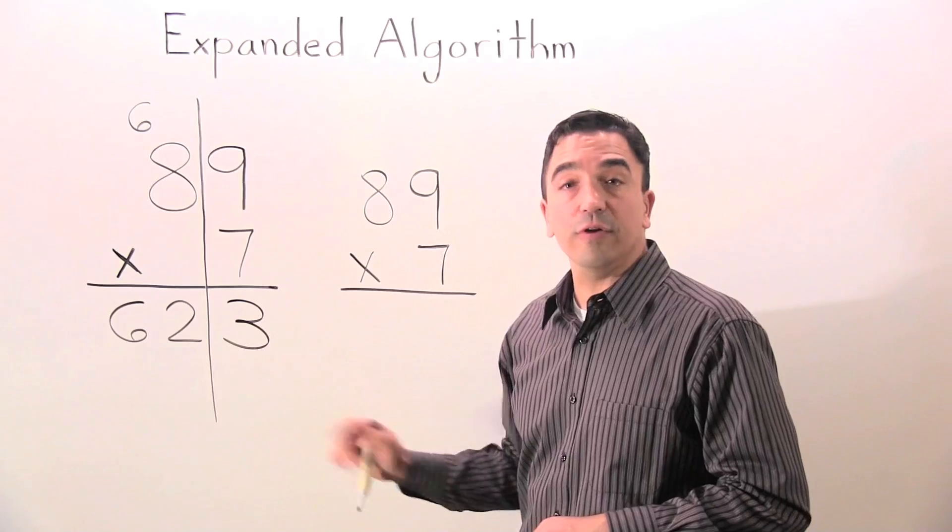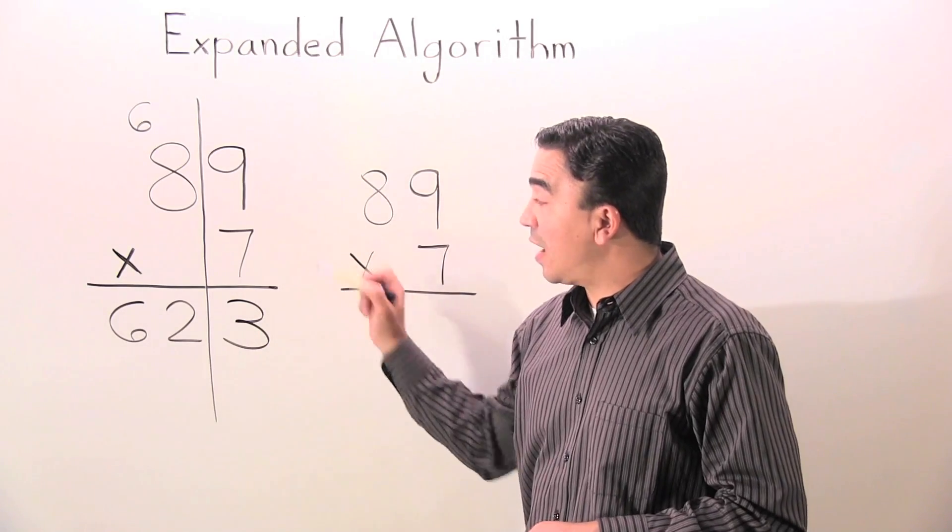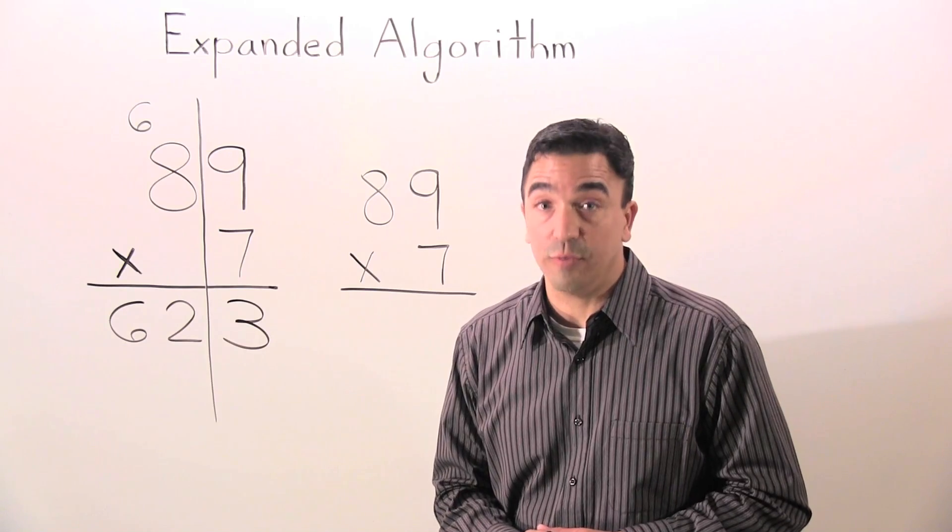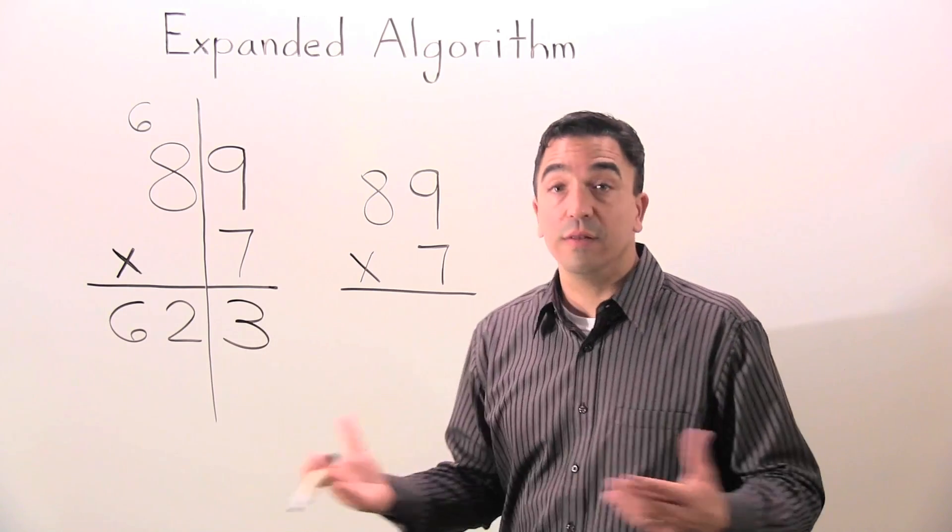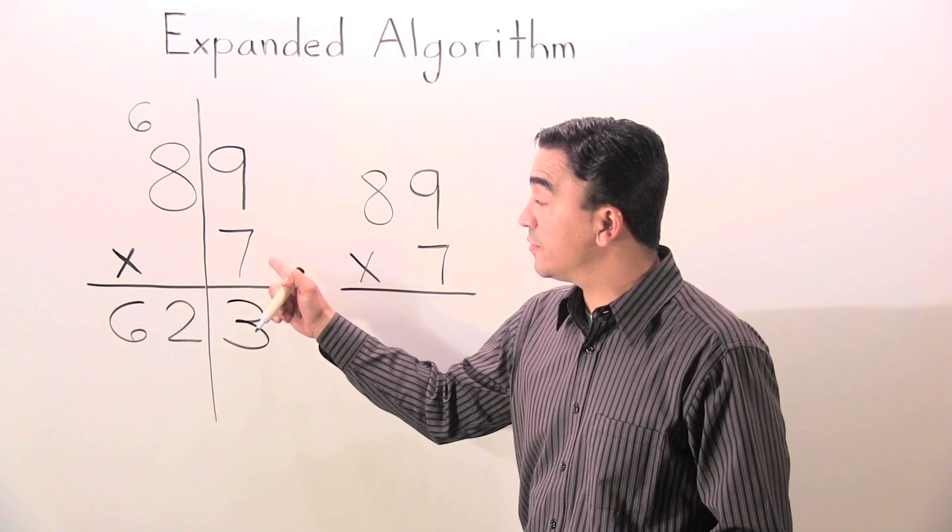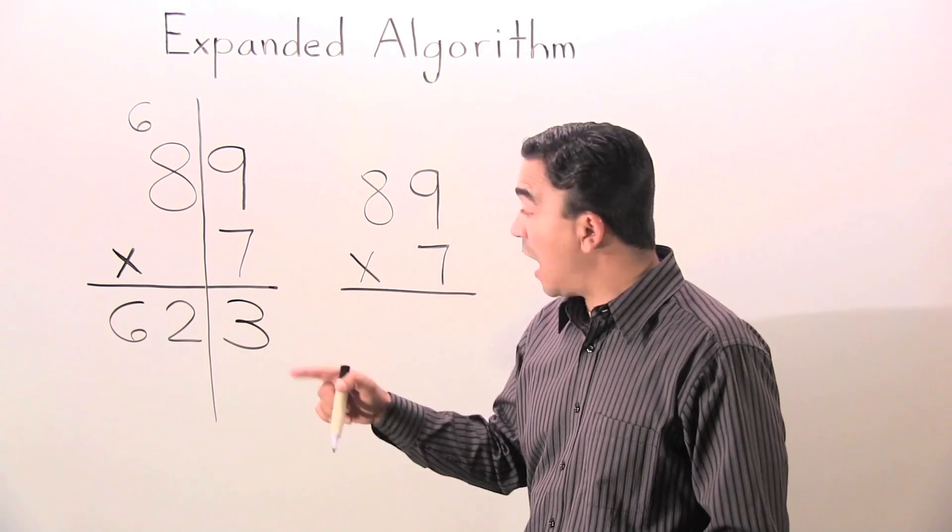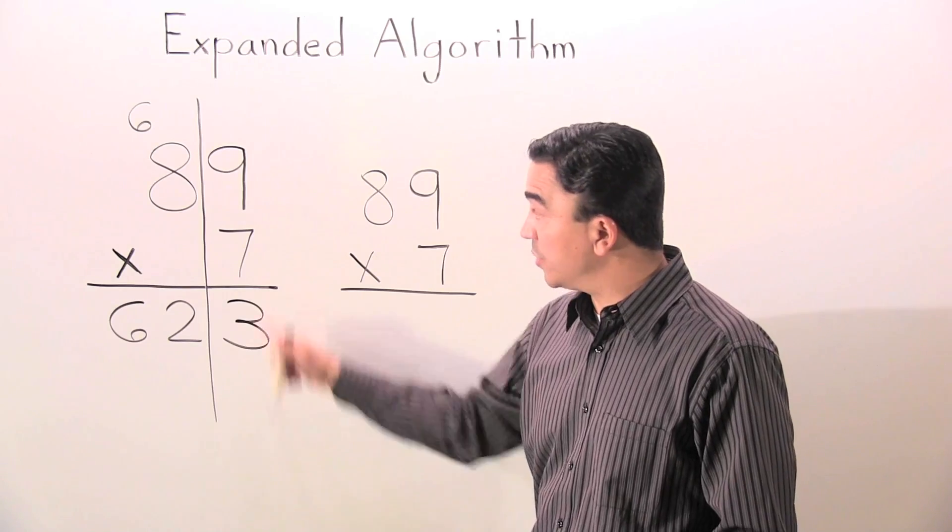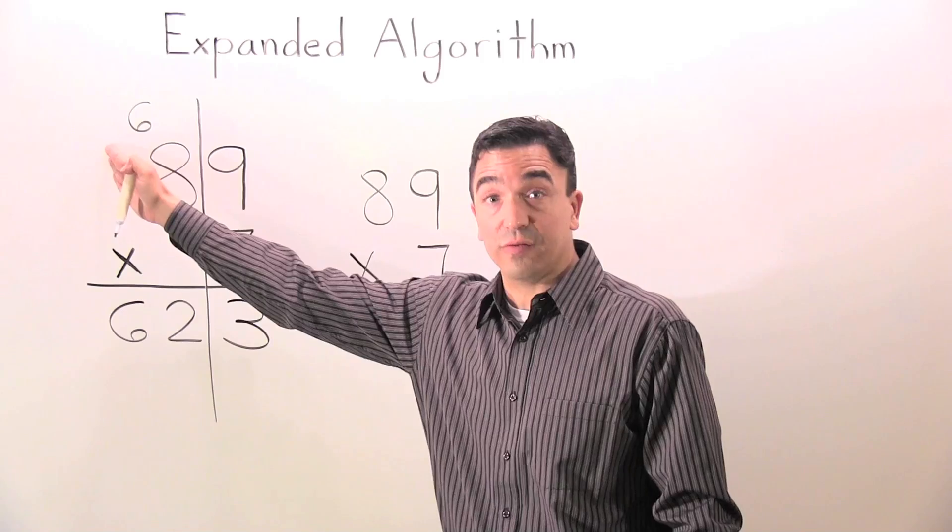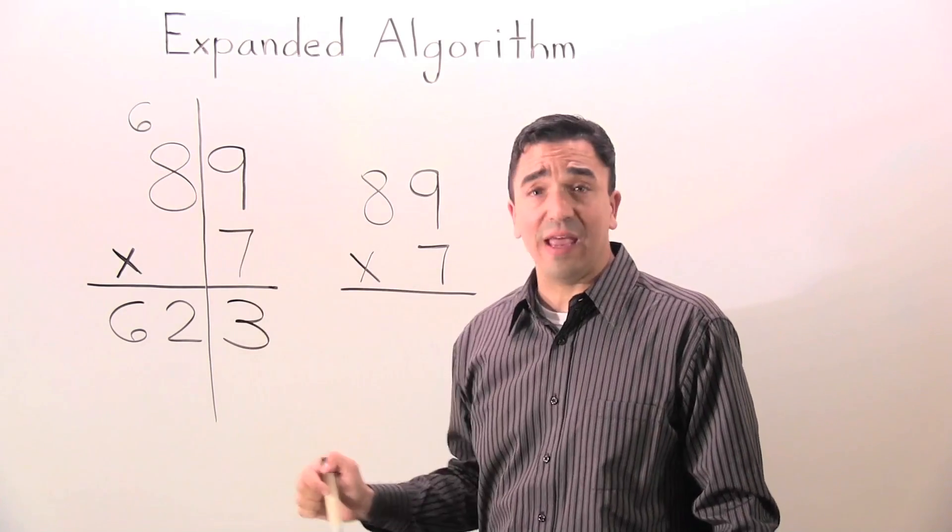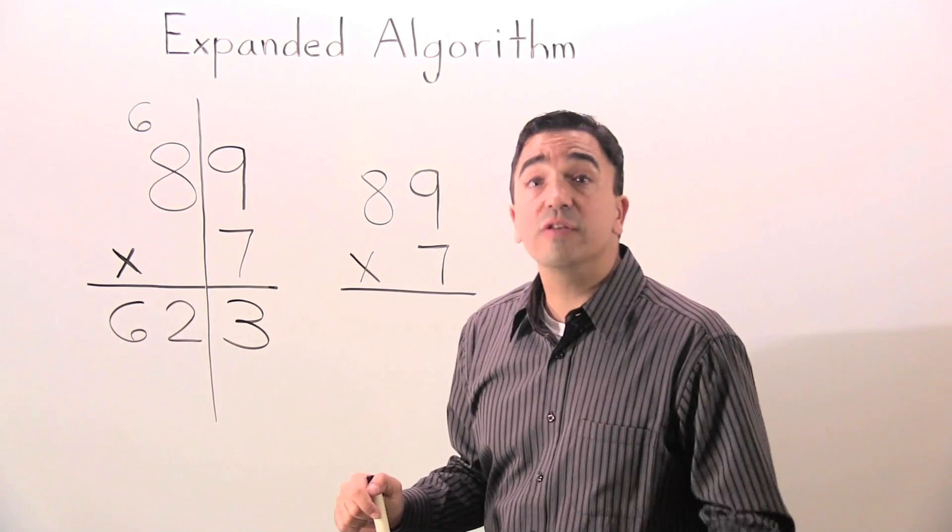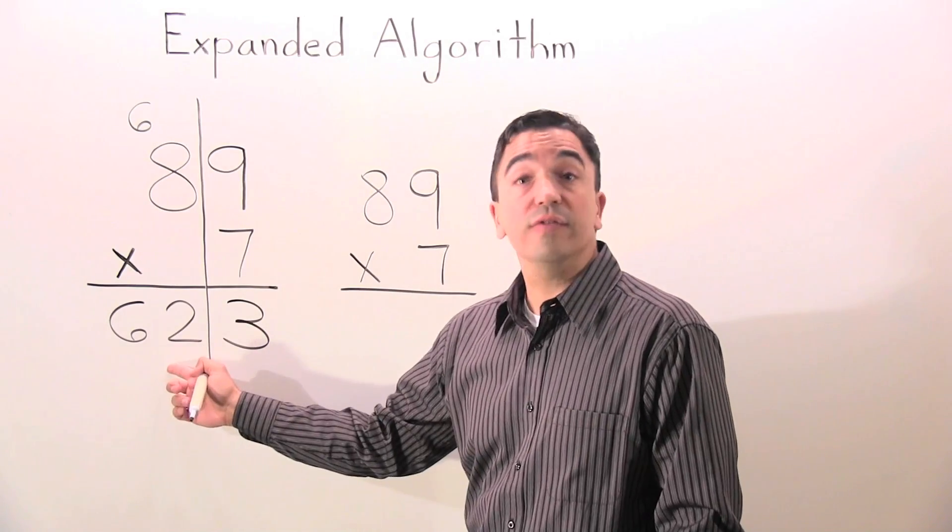Please look at this problem first. 89 times 7 gives us a product of 623. This is a standard multiplication problem. I multiplied 7 times 9. I got 63. I put the 3 in the 1s place. I regrouped the 6 into the 10s place. I multiplied 7 times 8, which is 56. I added 6 to 56 and I got 62.